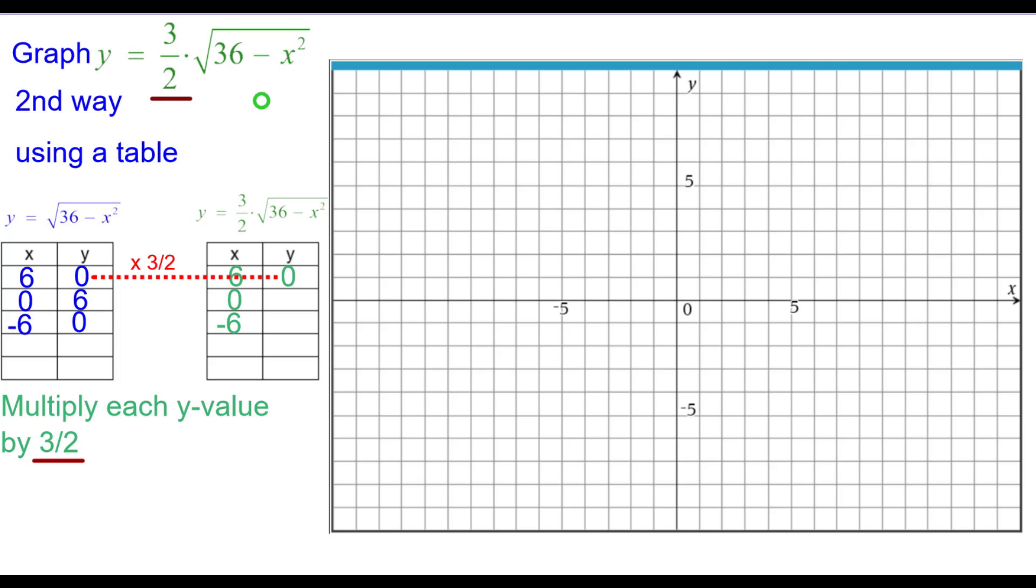Zero times three-halves is unchanged, so 6, 0. Zero, 6. Six times three-halves is 9, zero, 9. And again zero, we're going to get negative 6, 0.